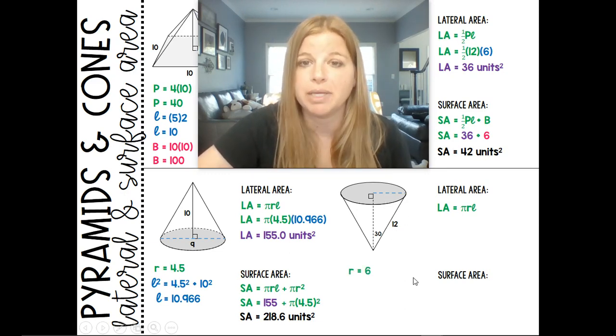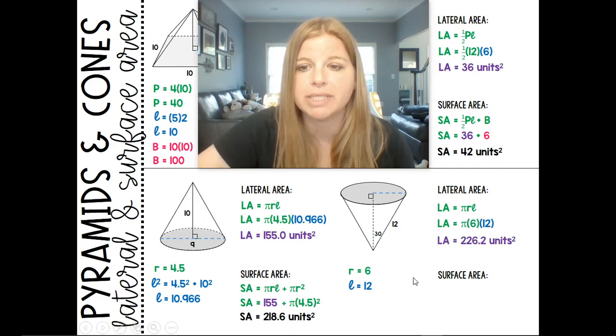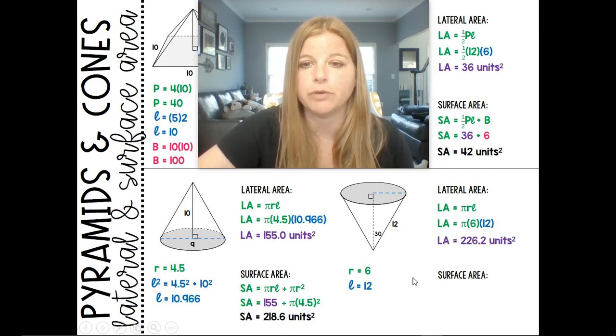My slant height, I am given, which is 12. And so that one's actually pretty easy to plug into our formula. And then I'm going to add that onto the area of the circle. We know the radius is 6. So I'm just going to plug that in, and the calculator pretty much does the work for me.